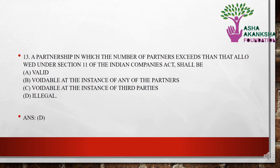The next question is: a partnership in which the number of partners exceeds the limit prescribed under Section 11 of the Indian Companies Act shall be — (a) valid, (b) voidable at the instance of any partner, (c) voidable at the instance of a third party, or (d) illegal. The correct answer is option D — a partnership in which the number of partners exceeds the limit under Section 11 will be illegal.